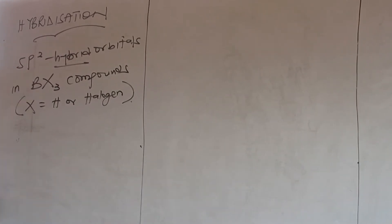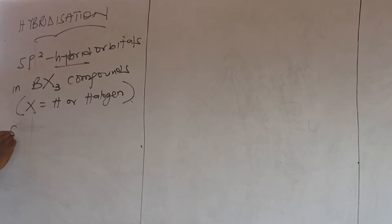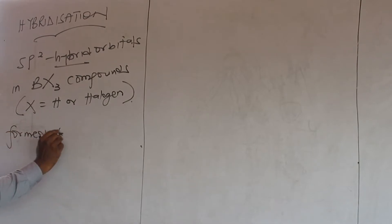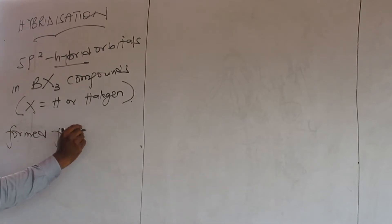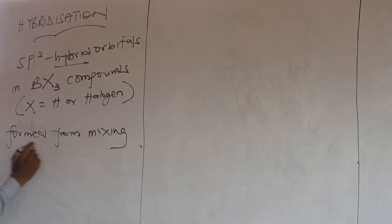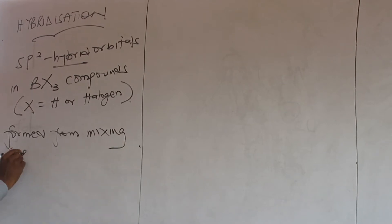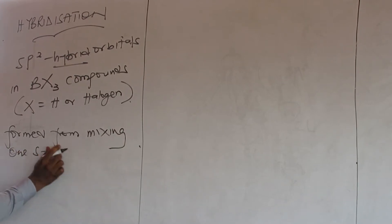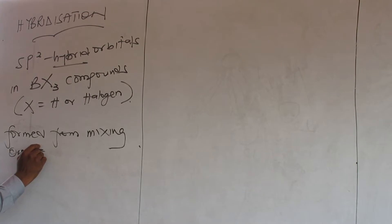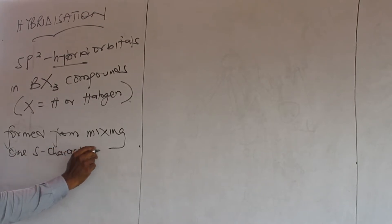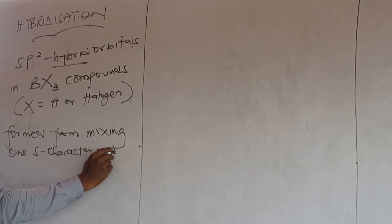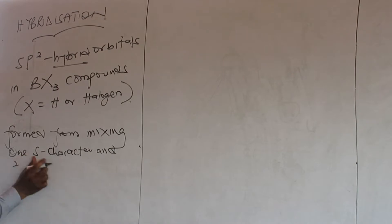So we'll first start with sp3. It is formed from mixing 1s character and 2p character.